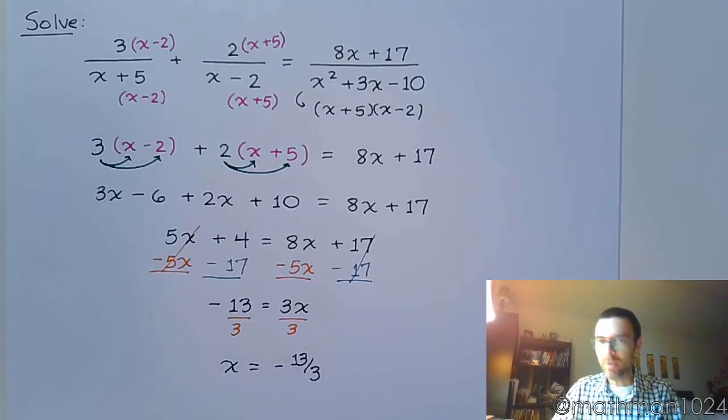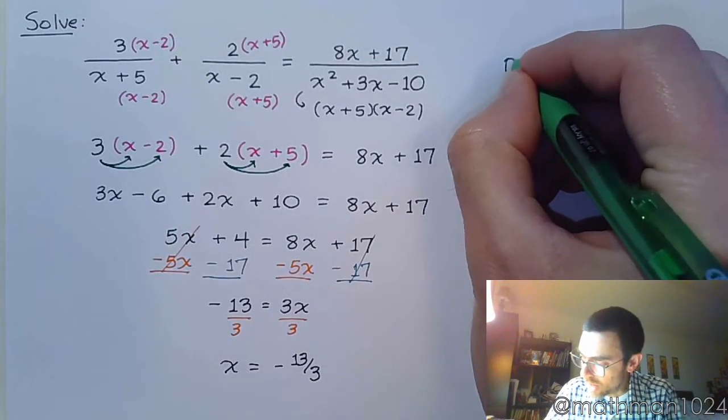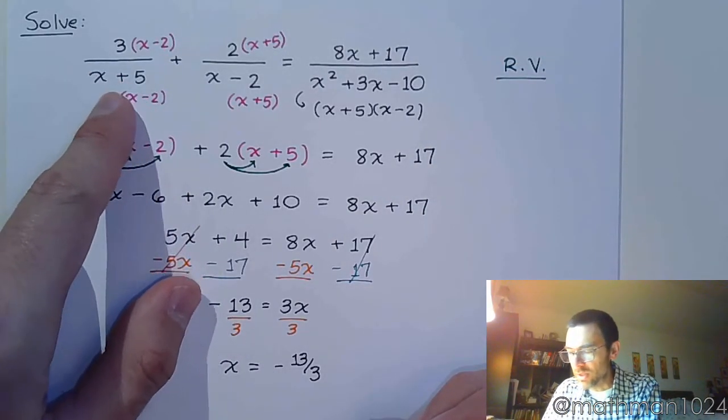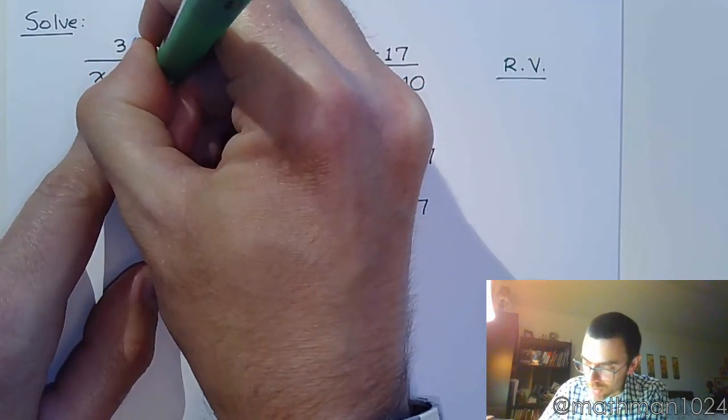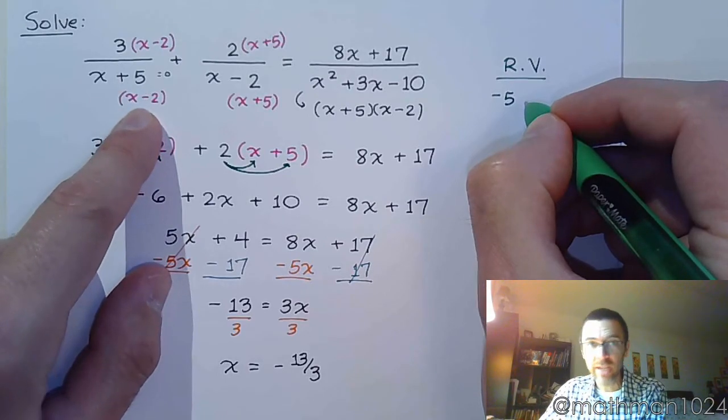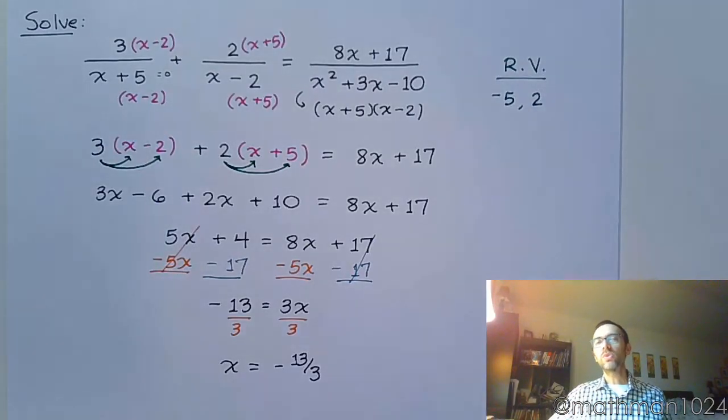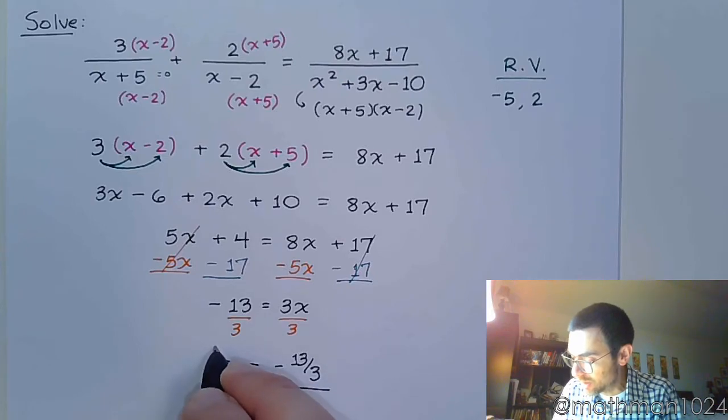You know what, that is a very nasty habit. I just want to box everything, right? Once you get x by itself, you just want to put a box around it. But we didn't check for restricted values. Were there any values that we were unable to have for a solution? Well, let's look at this. What would make x plus 5 equal 0? Well, if you imagine that you're setting this guy equal to 0 and solving it, you're going to see that negative 5 is a restricted value. And x minus 2 would become 0 when x is equal to positive 2. So these were the two values that we could never have as a solution. Well, we didn't see those guys as a solution. We saw x equals negative 13 over 3.